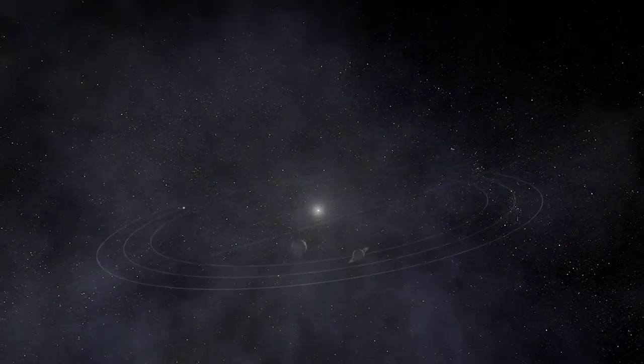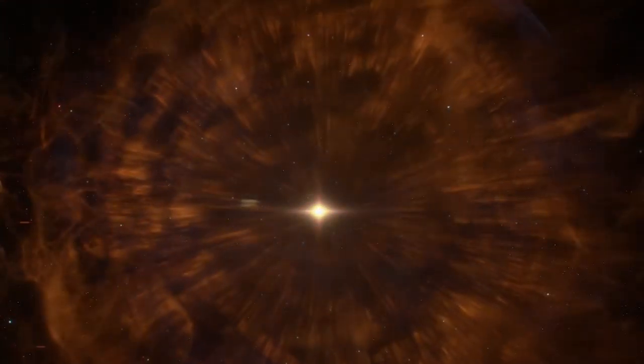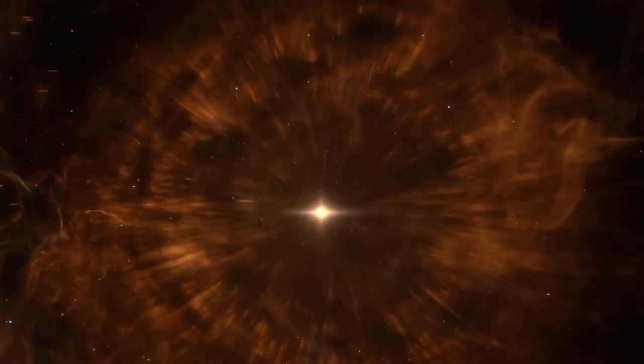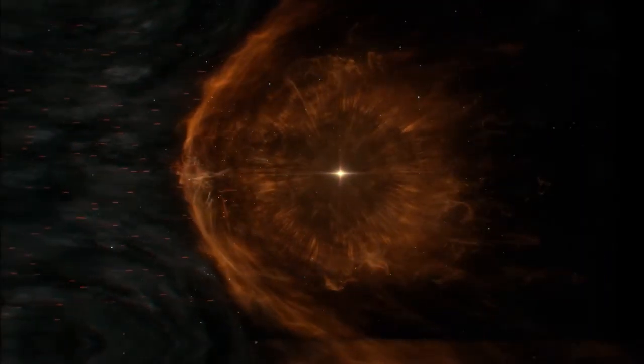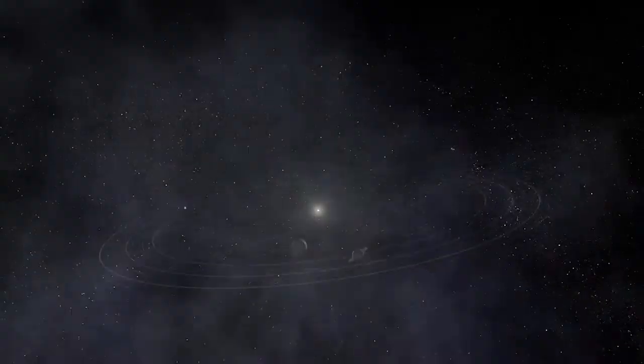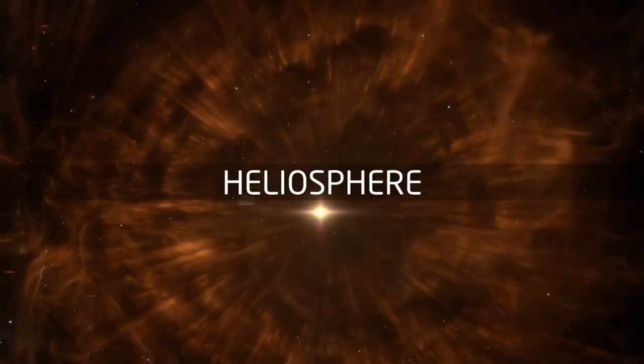The Sun is constantly shooting out streams of charged particles in all directions. This solar wind blows a vast magnetic bubble. It pushes out against the thin gas of interstellar space. Beyond the outer planets, our heliosphere,